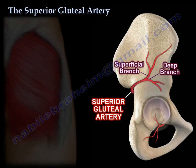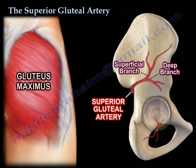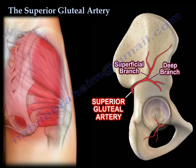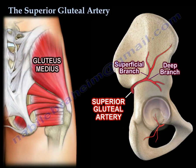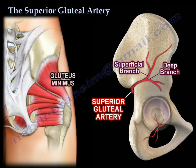The superior gluteal artery divides into superficial and deep branches. The superficial division enters between the gluteus maximus and medius, passing into the deep surface of the gluteus maximus. The deep division passes between the gluteus medius and the gluteus minimus, lying on the deep surface of the gluteus medius.